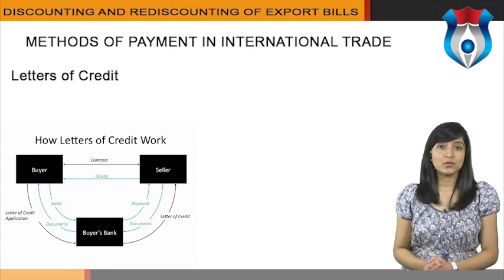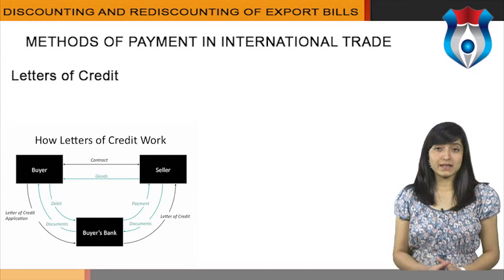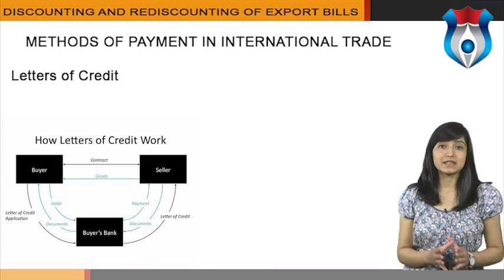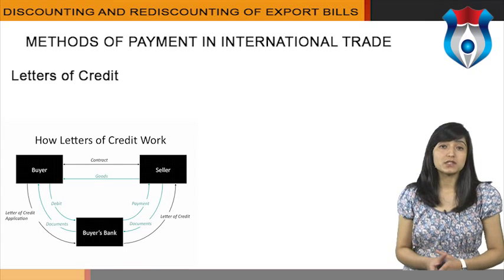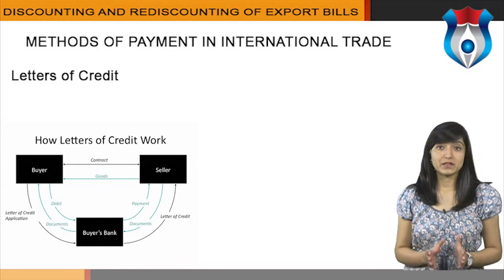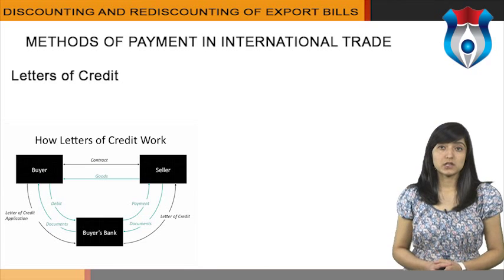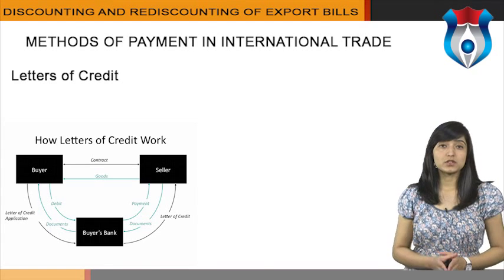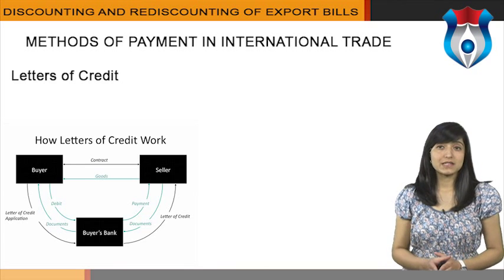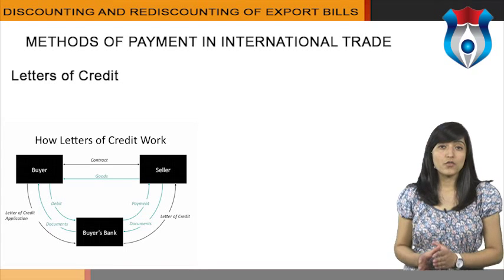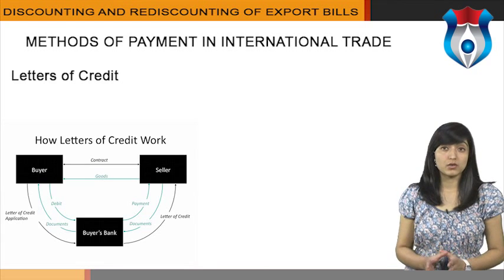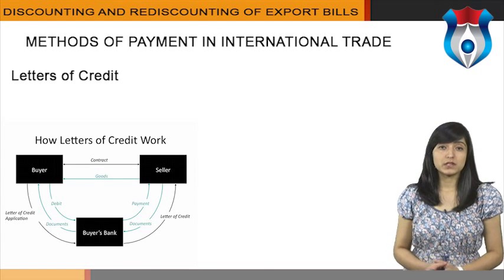Letters of credit are among the most secure instruments available to international traders. An LC is a commitment by a bank on behalf of the buyer that payment will be made to the exporter, provided that the terms and conditions have been met as verified through the presentation of all required documents. The buyer pays its bank to render this service. An LC is useful when reliable credit information about a foreign buyer is difficult to obtain but the exporter is satisfied with the creditworthiness of the buyer's foreign bank. An LC also protects the buyer, since no payment obligation arises until the goods have been shipped or delivered as promised.